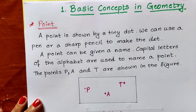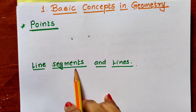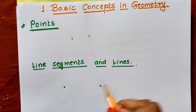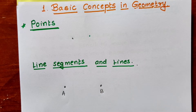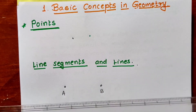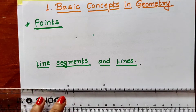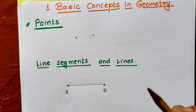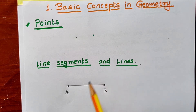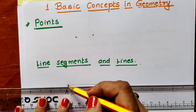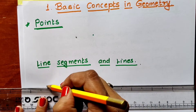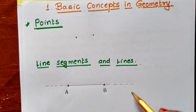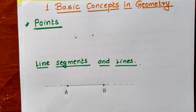Now let us see the second basic concept in geometry — line segments and lines. If I take any two points on this sheet of paper, point A and point B, points are nothing but tiny dots. I will join them using my ruler. I can join these two points with the ruler and with the help of my pencil. We get a straight line AB.